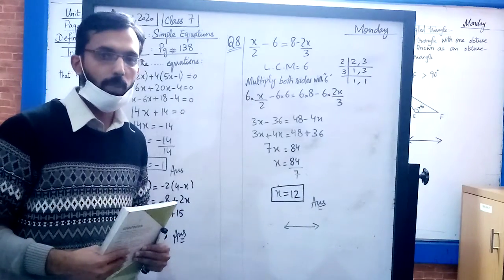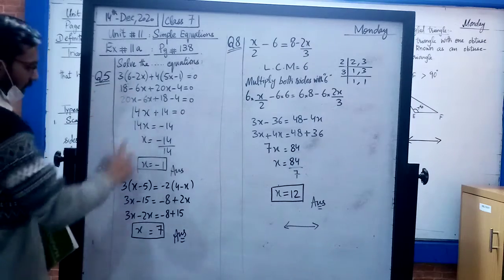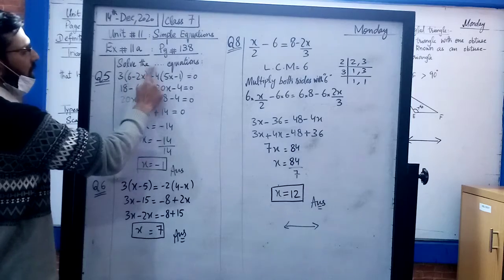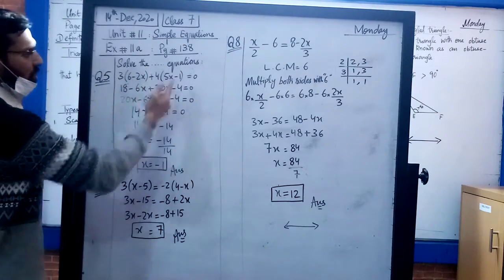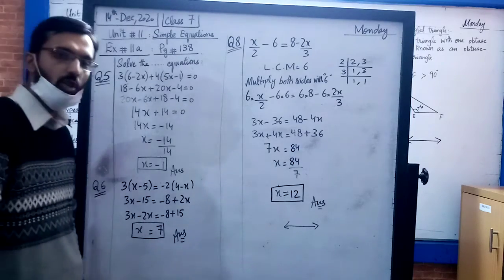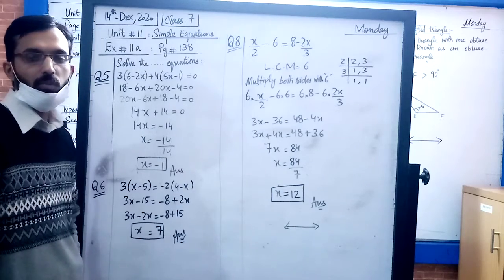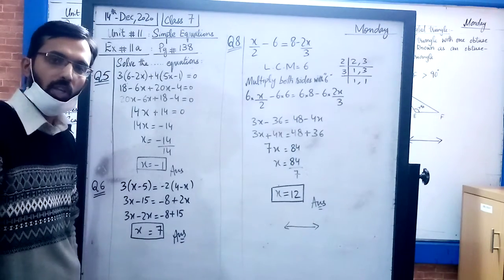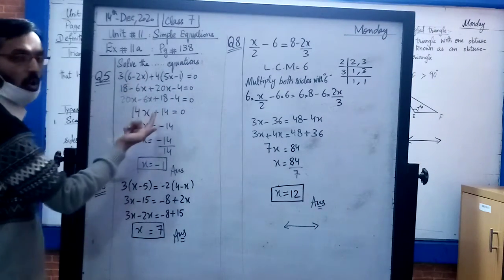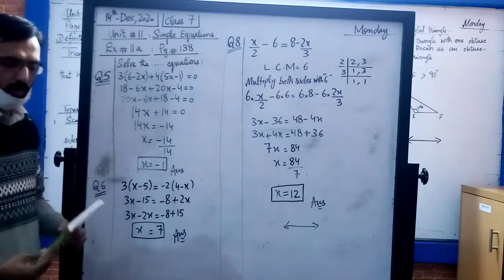Now, let's understand the questions. Question number 5, part A: solve the following simple equations. Simple equations, as defined in our last lecture, have variables with maximum power of 1. We need to solve for the variable x to find its value.